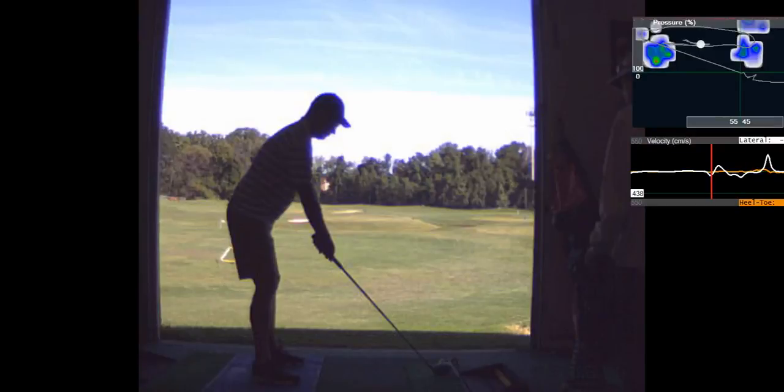Pay attention to your setup. When you push your hips back and slide your hands down your thighs to touch the top of your knees, your arms should be hanging directly underneath your shoulders. In this case, that's not what's happening. Your arms are too far out - you're reaching too much for it, so that's a little bit out of balance.